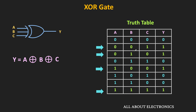In the first three cases, either input A, B, or C alone is logic 1, while in the last case all three inputs are high. That means for the three-input XOR gate, when an odd number of inputs are high, the output will be equal to high. And if an even number of inputs are high, the output of the logic gate will be equal to zero. This is also true for the N-input XOR gate — in general, for the N-input XOR gate, the output is equal to logic 1 when an odd number of inputs are high.